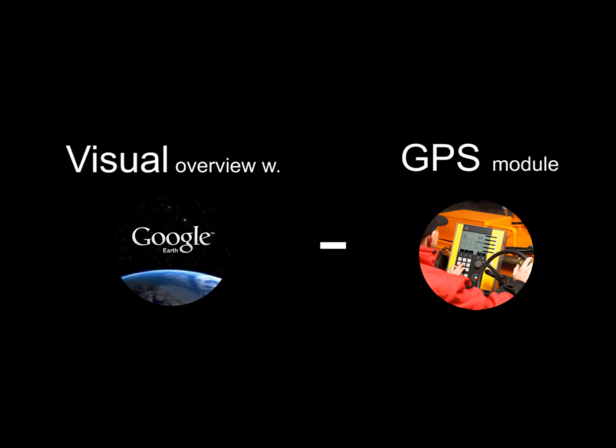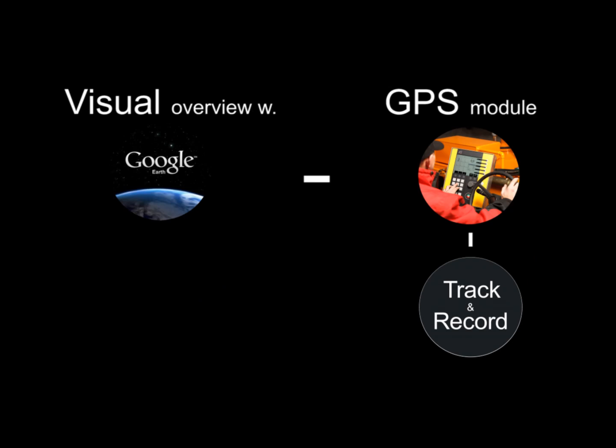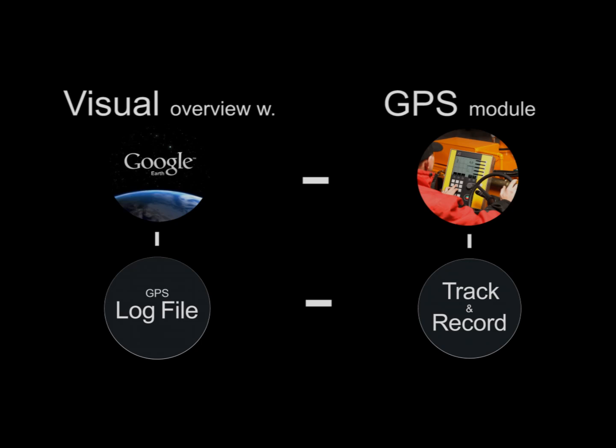With the GPS model, it is possible to track and record the line marking positions for each individual road marking job. Afterwards, your activity will be automatically converted into a separate GPS log file.